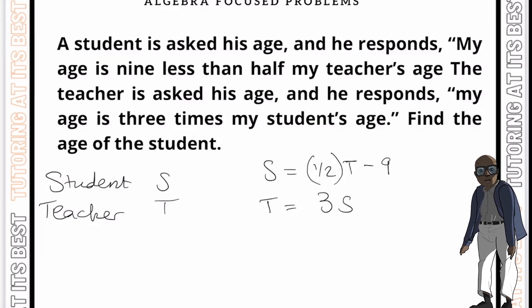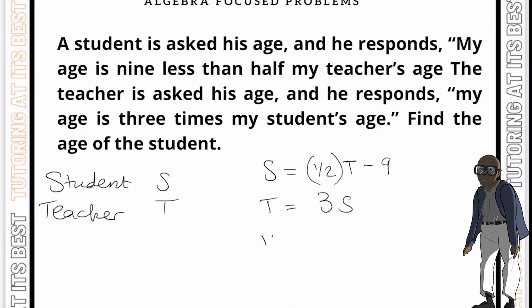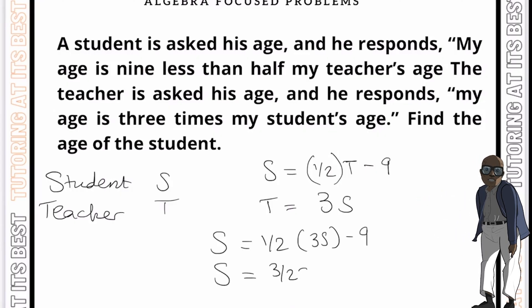I hope you can see how I've extracted that information from just reading the first two sentences. And now we can substitute the second equation into the first equation. So we can simply say a half multiplied by three S minus nine. And that would then give us the student's age. And if we simplify this, we'd get S equals three over two S minus nine.